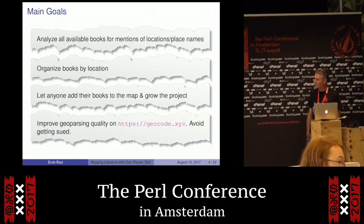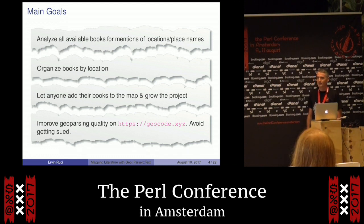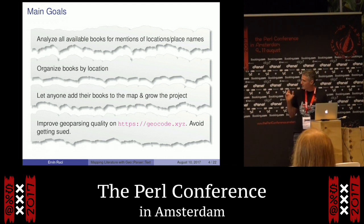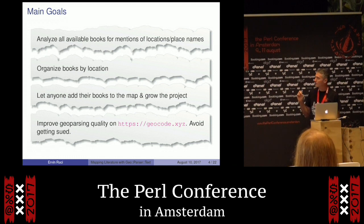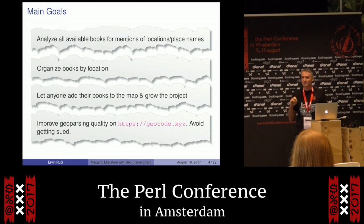My main goals are to analyze all available books that I can find — books available in text format — for locations and place names. I'm scanning books with a program and extracting and disambiguating location names and city names in a location context. Then I organize these books into a nice interface where everyone can add more books to the map and grow the project. My main goal is actually to improve the geoparsing quality on Geocode XYZ, which is another one of my business slash projects slash hobbies. And obviously, I don't want to get sued — I've been sued in the past for copyright infringement and it's not a nice experience.